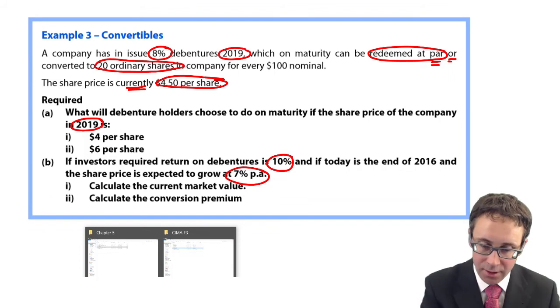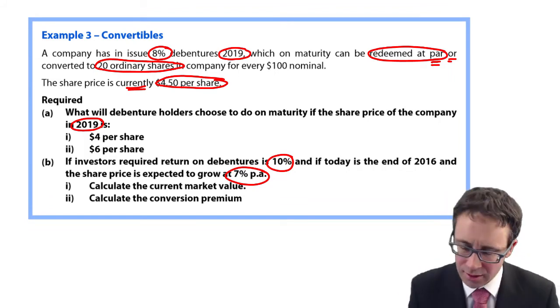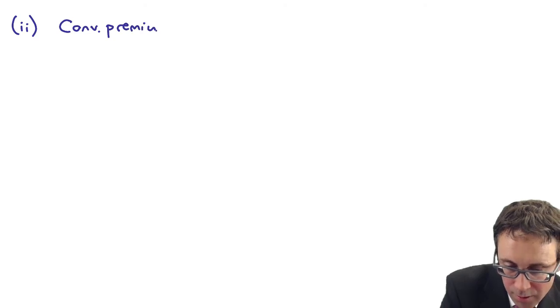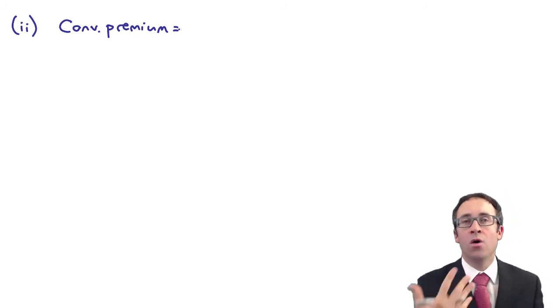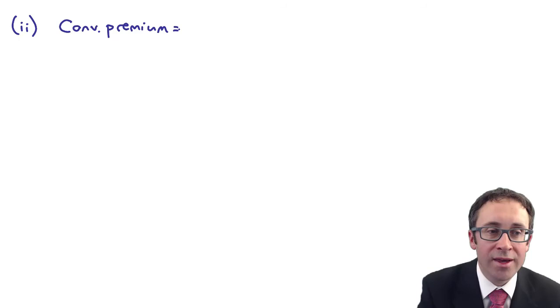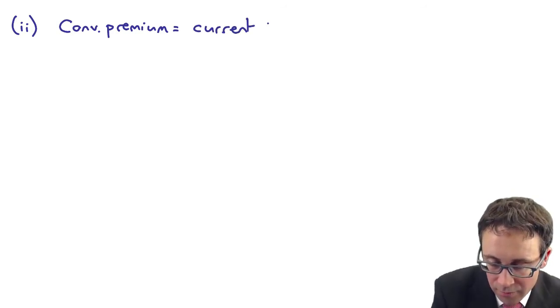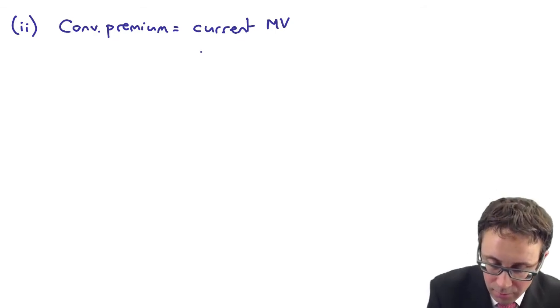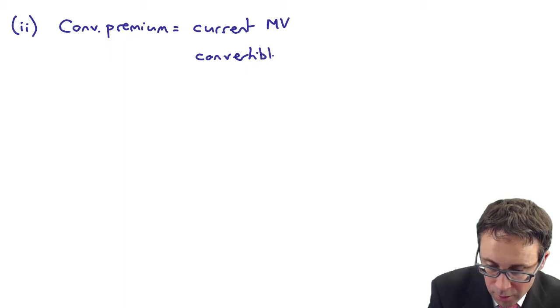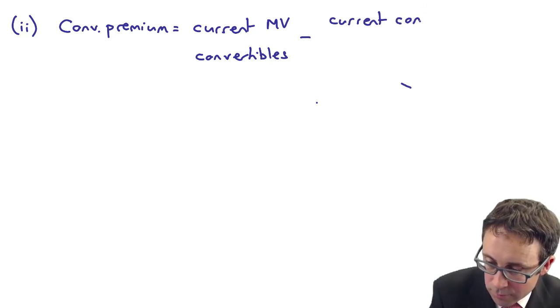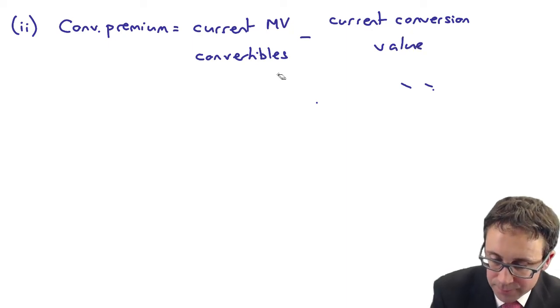So what have we got? Next question, part two. Calculate the conversion premium. What on earth is the conversion premium? Well, your conversion premium is looking at the excess of the market value that you get over the current market value of the shares, so if you like the current conversion value. So what you've got there is to work out the conversion premium. You take the current market value of the convertibles, less the current conversion value.